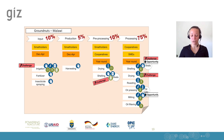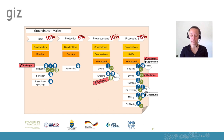Drying is a very critical process for groundnuts because moisture content needs to be reduced. This is done using the sun as an energy source providing heat for drying. But oftentimes sun drying can take a long time, which increases the danger of mould and toxins.